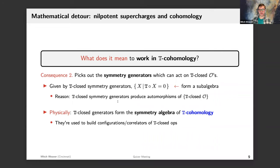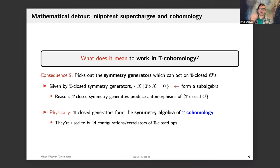The second major consequence of working in T-cohomology is that it picks out the symmetry generators which can act on T-closed operators — namely the T-closed symmetry generators, those annihilated by T based on the symmetry algebra relations. One can show using the Jacobi identity that the set of T-closed symmetry generators forms a subalgebra. Physically, these are the symmetry generators that produce automorphisms of our set of T-closed operators, mapping a T-closed operator back to a T-closed operator — they form the symmetry algebra of our T-cohomology theory.